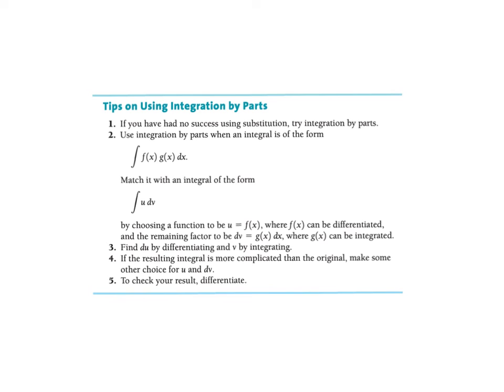By choosing a function to be u equals f of x, where f of x can be differentiated, and the remaining factor dv, where g of x can be integrated. So you want to choose something for u that you can easily get a derivative of. You want to choose something for dv that you can easily get an antiderivative of.